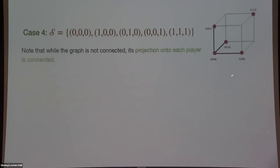Observe that while this graph is not connected, the projection of this graph onto each player is connected. For each player, take their possible input values and merge all vertices sharing that input value; add an edge if there was an edge in the original graph crossing this boundary. For this example, this converts to two vertices (labeled 0 and 1) with a single edge — a connected graph. And this property holds for each of the three players.